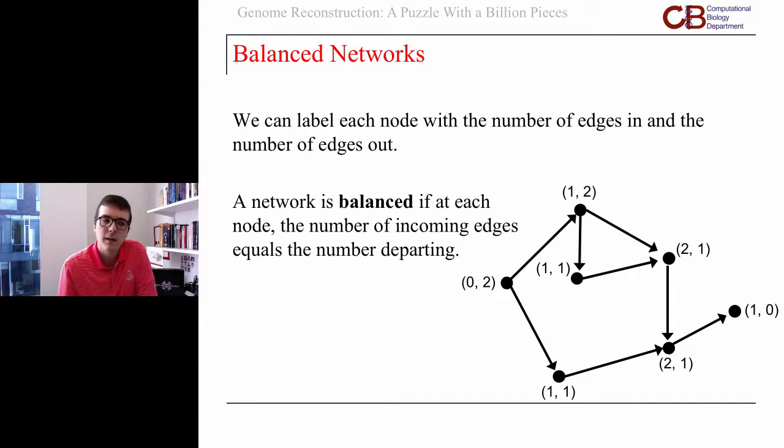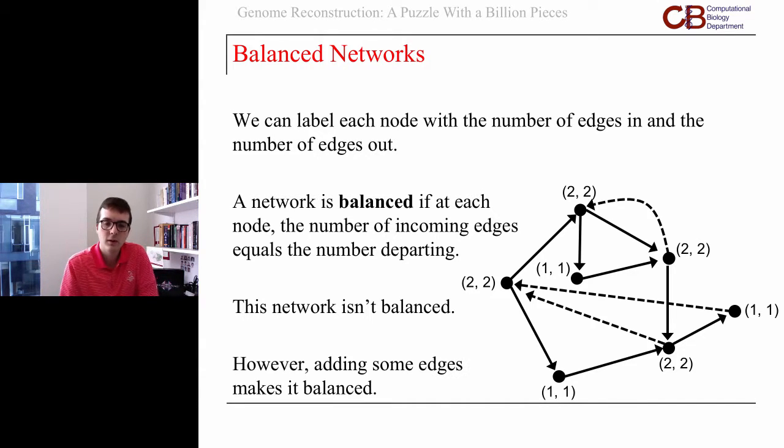That network is not balanced. One node has zero edges in and two edges leaving it. A couple of the nodes are balanced, so they have one edge in and one edge out. We could add a few edges and produce a balanced directed network.